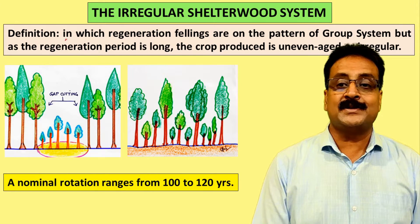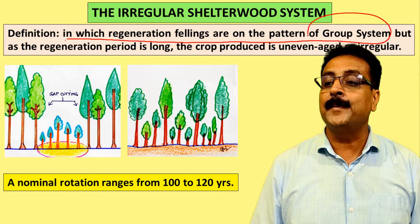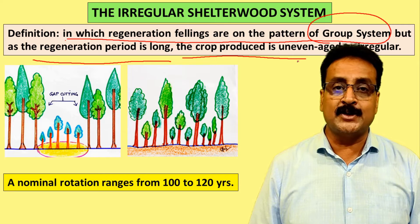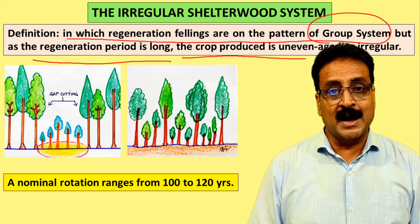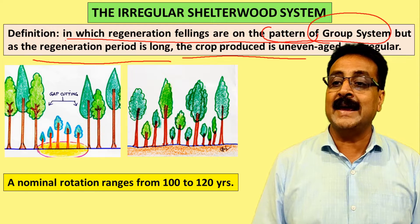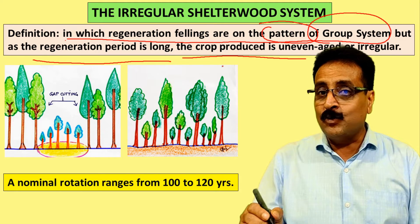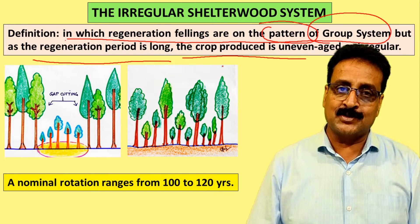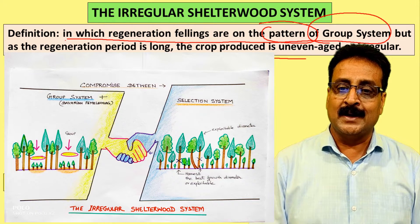The definition states: a system in which regeneration fellings are on the pattern of a group system, but as the regeneration period is long, the crop produced is uneven-aged or irregular. It is not exactly a group system — it follows the pattern of one. Because the regeneration period is very long, it is a compromise somewhere between the group system and the selection system.